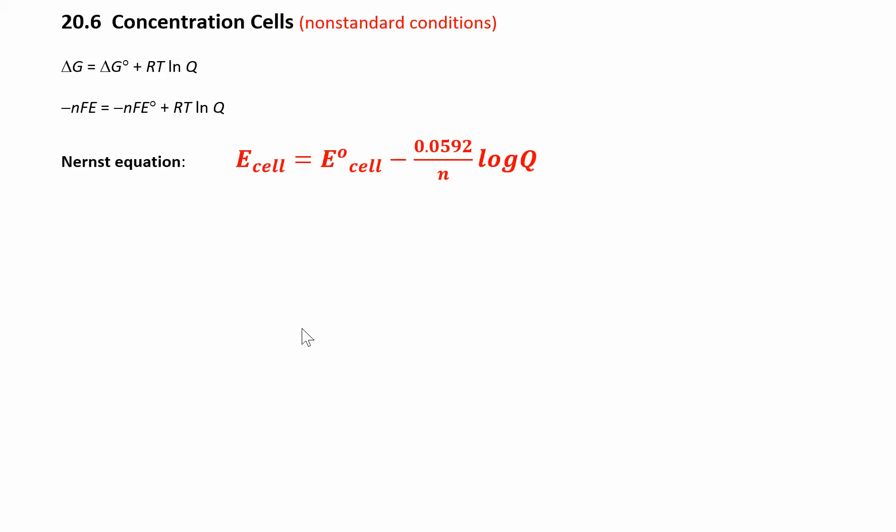So far we've only been looking at what happens under standard conditions. Now let's look at what happens under non-standard conditions. Remember what standard conditions are: if you have an aqueous solution, the concentration is 1 molar. If you have a gas, the pressure is 1 atmosphere. If everything's 1, everything works out easily. If it's not 1, you're going to have to calculate a Q.